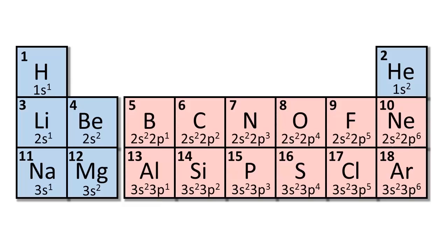Let's look at a mini periodic table of the first 18 elements, from hydrogen to argon. Along with the chemical symbols and atomic numbers, the electron configurations for the electrons in the outermost principal level are also shown. Notice any patterns?